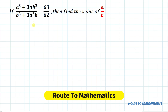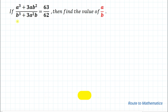Hello everyone, welcome to Root 2 Mathematics. In this video we are going to solve this interesting question. Here we have given: if a³ + 3ab² divided by b³ + 3a²b equals 63 by 62, then find the value of a by b.